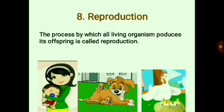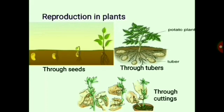Our eighth characteristic is reproduction — all living organisms produce their young ones. Animals like cats, dogs, and cows give birth to their young ones, while birds, insects, and fishes lay eggs from which the babies come out. In the case of plants, most reproduce through seeds — like mango, orange, etc. But there are other ways too: through tubers in the case of potato plants, and through cuttings, where a part of a parent plant is cut and potted in moist soil — done mainly for rose, cactus, banana, etc.